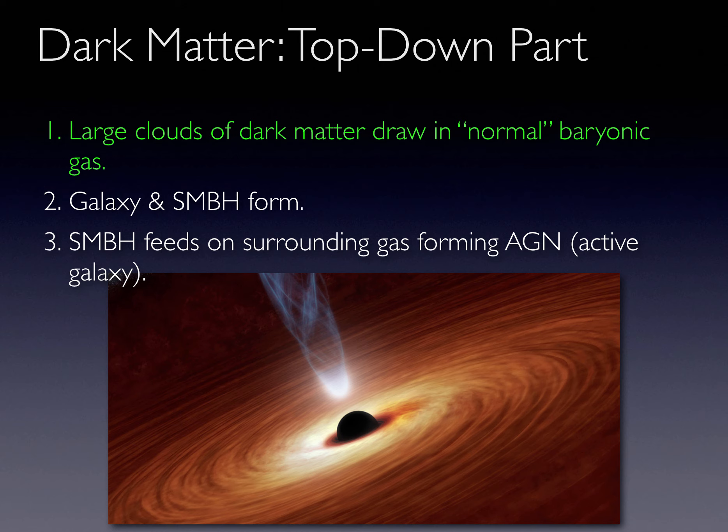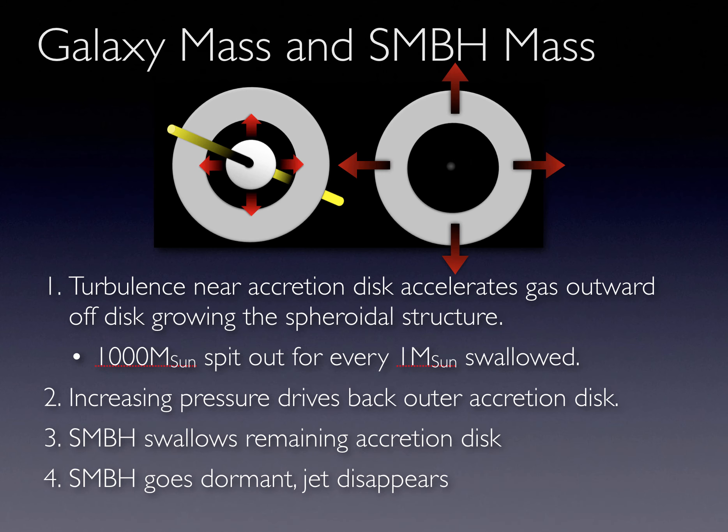As the black hole feeds and grows, the gas surrounding it becomes hotter and more turbulent. The turbulence not only ejects gas off the accretion disk of material, but it may also compress gas farther out and kickstart star formation. The currently measured correlation between black hole mass and outer star speeds and central bulge mass may have been established at this time.